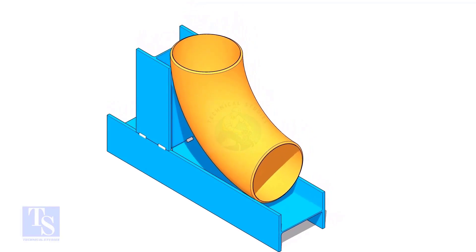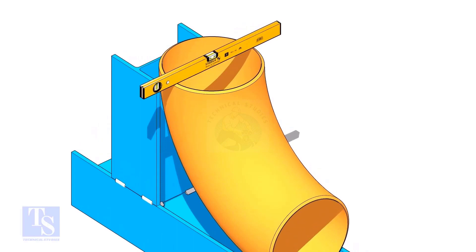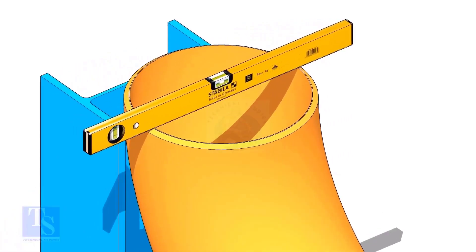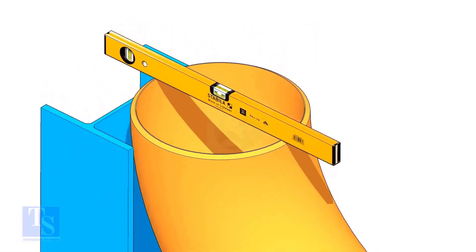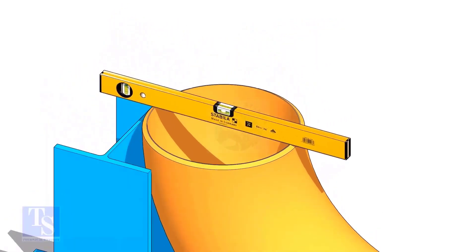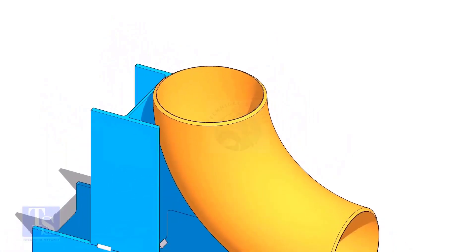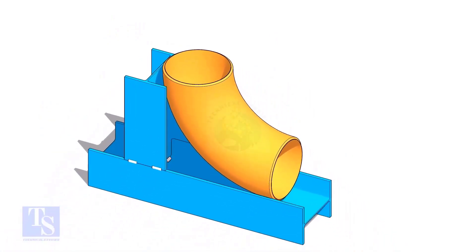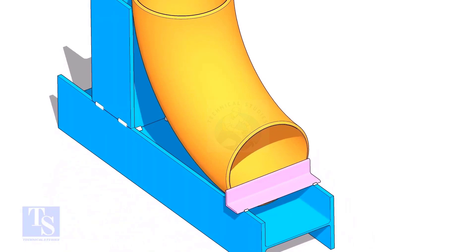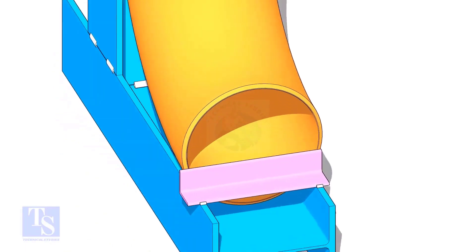Put the elbow in the jig. Level the top face of the elbow on both ways. Tack weld a piece of angle bar or a piece of a plate at the bottom side of the jig to arrest the elbow.